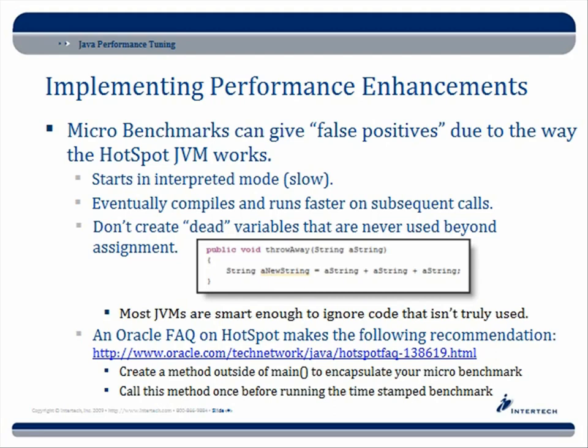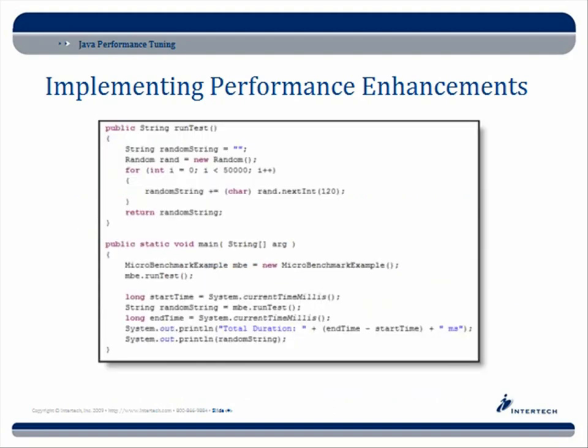You might start seeing better performance than you expect or, in some cases, worse. The Oracle FAQ on HotSpot makes the following recommendations if you're going to do any of these micro benchmarks — I've included the URL here. Create a method outside of main to encapsulate your micro benchmark, and call this method once before running the timestamp benchmark. In main, call the runTest method once first, then on the second call take your timestamps to calculate the duration.